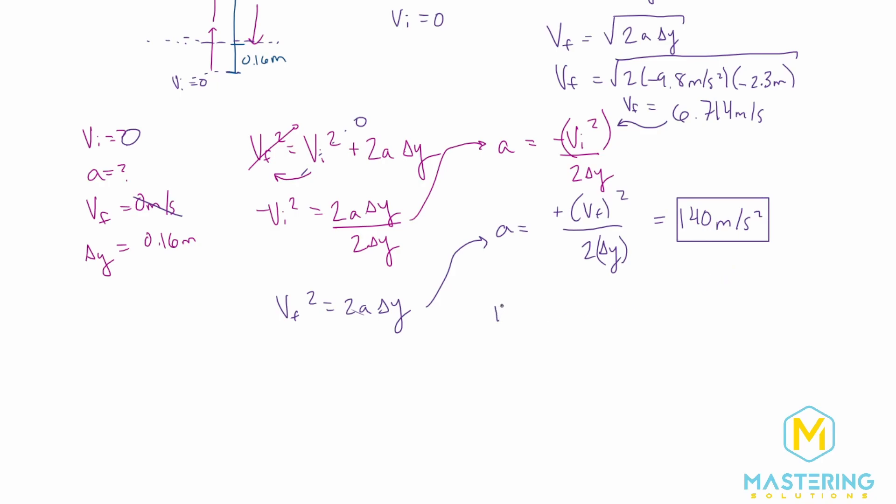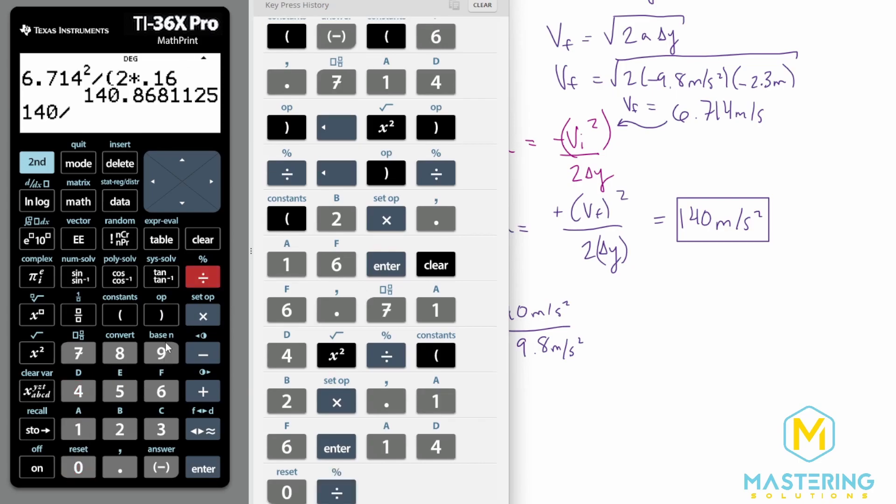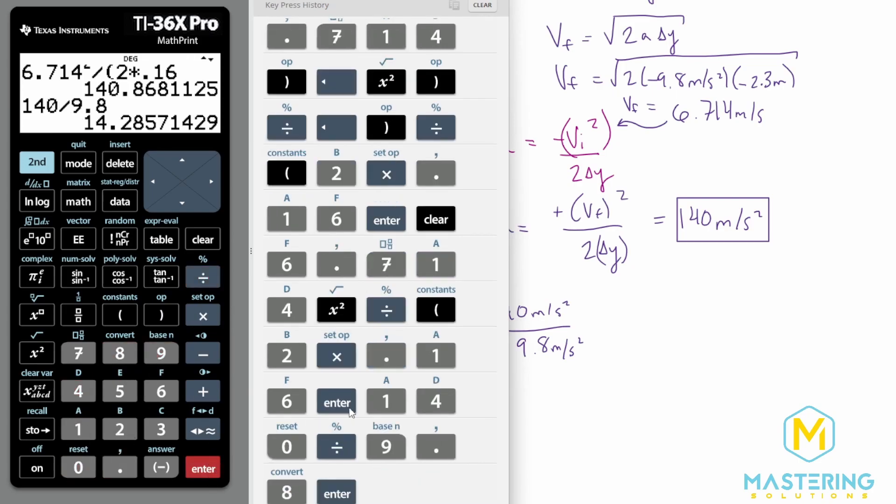So we'll take 140 meters per second squared and divide it by g, which is 9.8 meters per second squared. 140 divided by 9.8 will give us 14 g's.